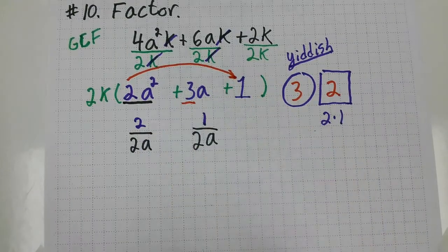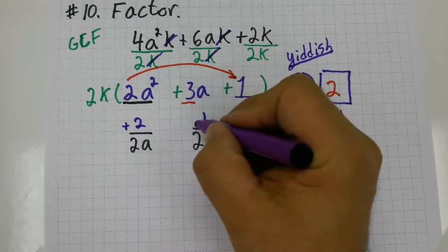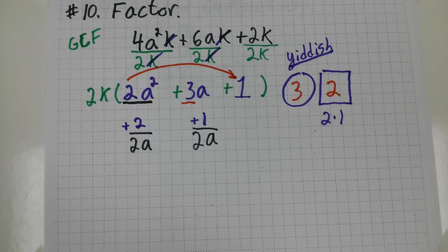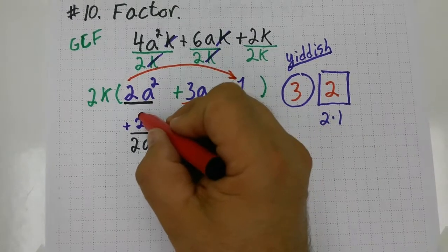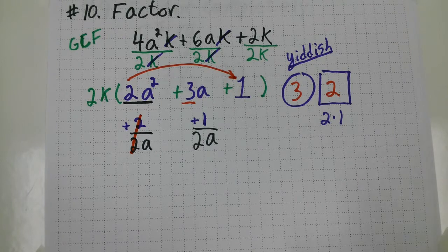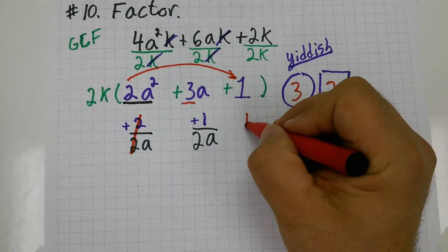Now, this one's plus plus, so that means my symbols are going to be plus plus for my factors. Now, what you need to do is look to see if anything simplifies. And notice, these 2s cancel out, or simplify. So, that's going to give me a 1 over a.